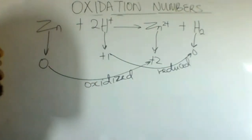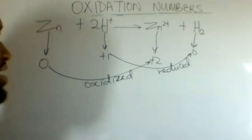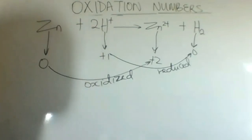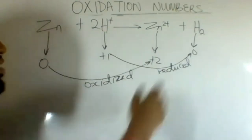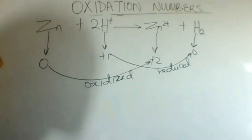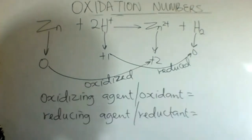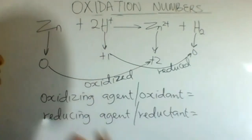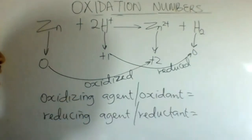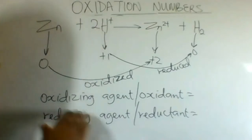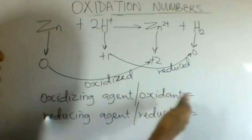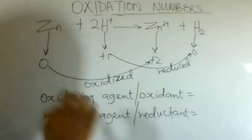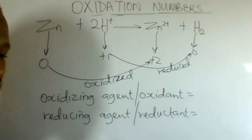Therefore, the species oxidized and reduced are: zinc was oxidized and hydrogen ion was reduced. The oxidizing agent caused the oxidation and the reducing agent caused the reduction.